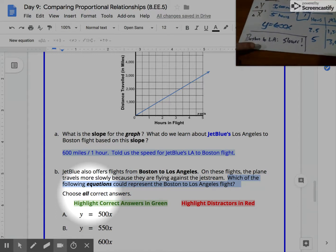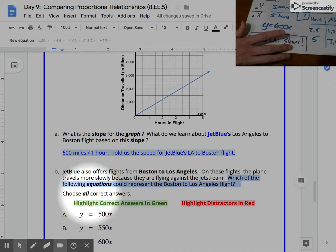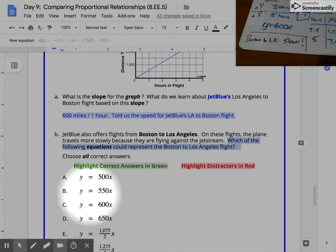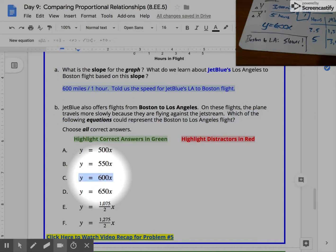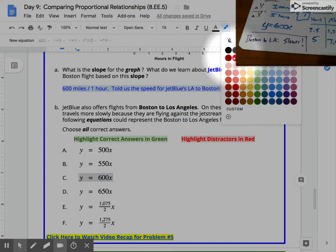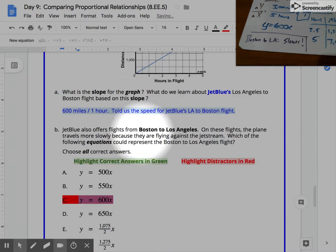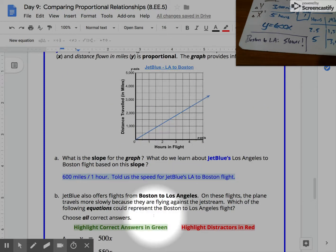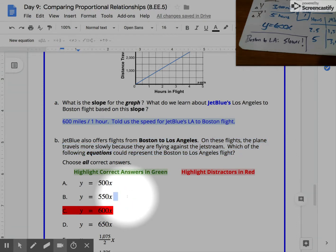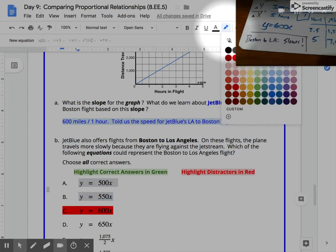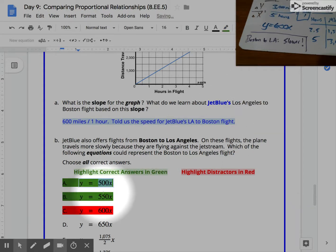The key to see here is that the Boston to LA flight is slower. So we need a slope that is smaller than y equals 600x. In fact, y equals 600x, this answer here, is the biggest distractor. That's the equation that matches Los Angeles to Boston. But now we're talking about which equation could represent the Boston to Los Angeles flights, which move more slowly. It tells me that A and B could be correct. Those slopes are both smaller than 600. That would be a plane at 500 miles per hour or a plane at 550 miles per hour.